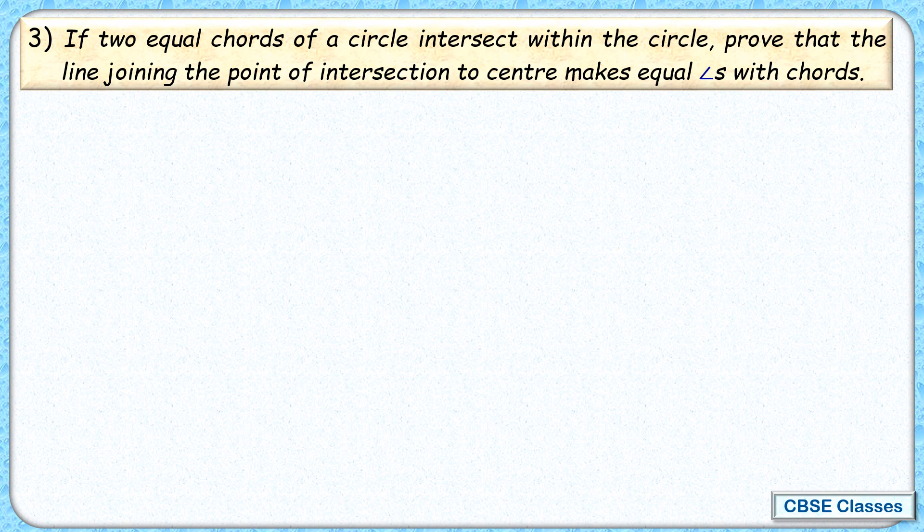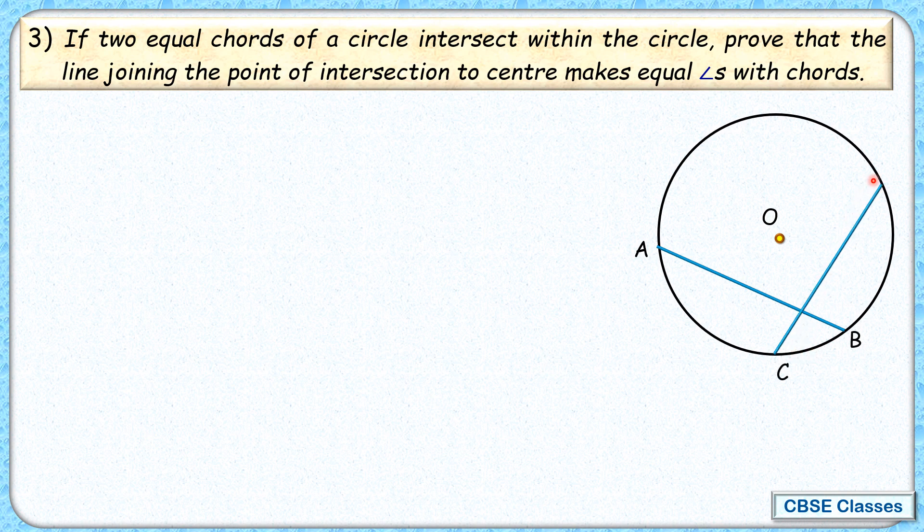Let's solve the third question. Here we have given two equal chords of a circle intersect within the circle. We have given a circle with center O and in this circle there are two equal chords. Let's take them as chord AB and chord CD. And they are intersecting here at point E.